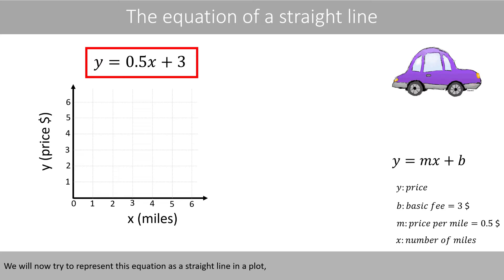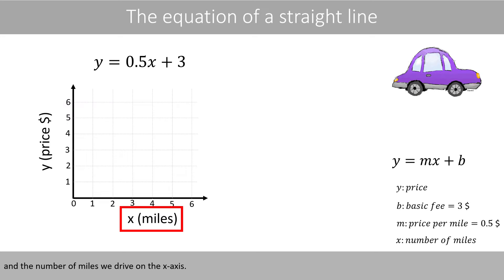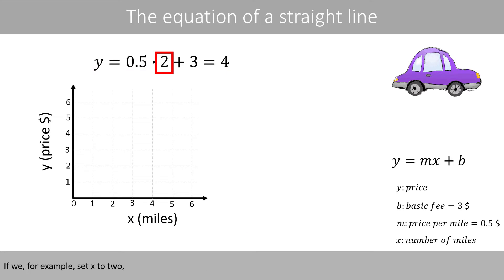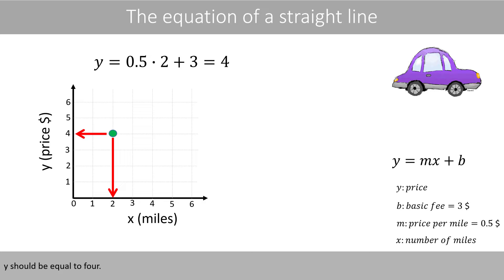We'll now try to represent this equation as a straight line in this plot, where we have the price on the Y axis and the number of miles we drive on the X axis. To draw a straight line, we need to know two points in this graph. If we set X to 2, we see that Y is equal to 4. Our first point in this graph is therefore located here, because our equation told us that if X is equal to 2, Y should be equal to 4.